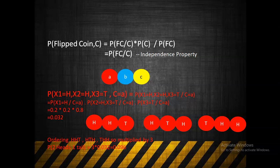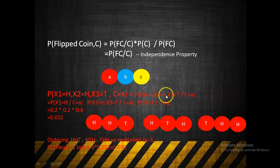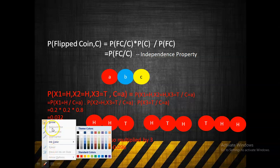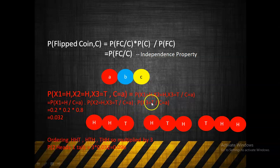Taking coin A — shown in red — if X1 = Head, X2 = Head, and X3 = Tail, then P(X1=H | Coin=A) = 0.2, P(X2=H | Coin=A) = 0.2, and P(X3=T | Coin=A) = 0.8. Multiplying these gives 0.2 × 0.2 × 0.8 = 0.032.